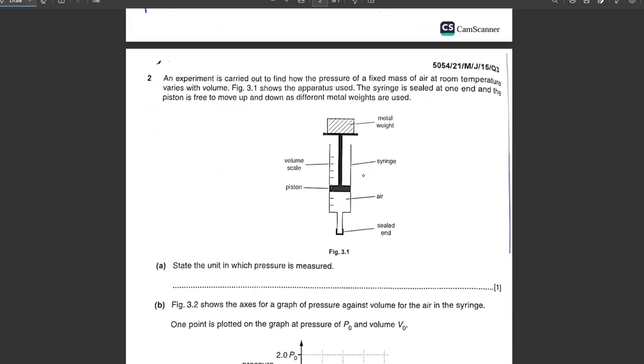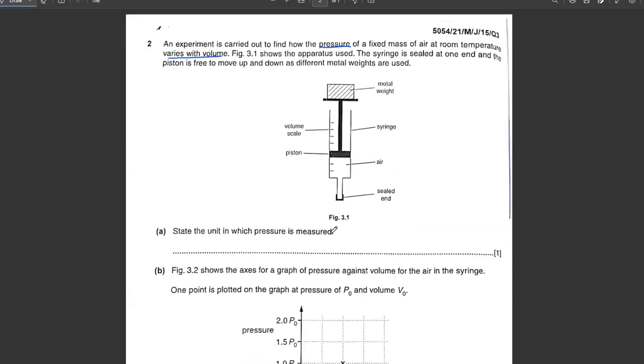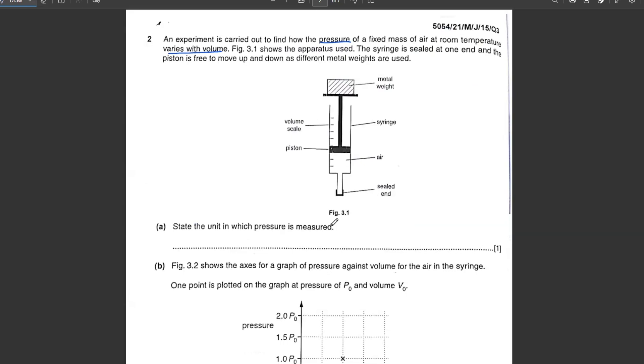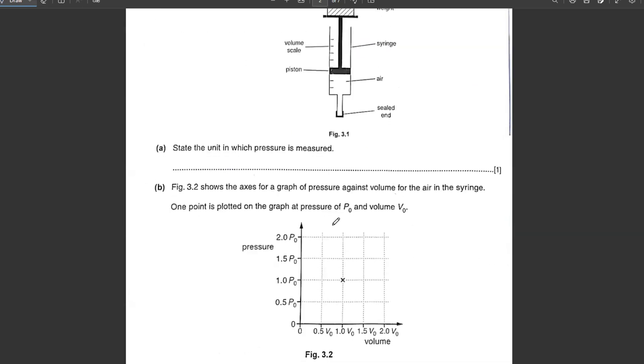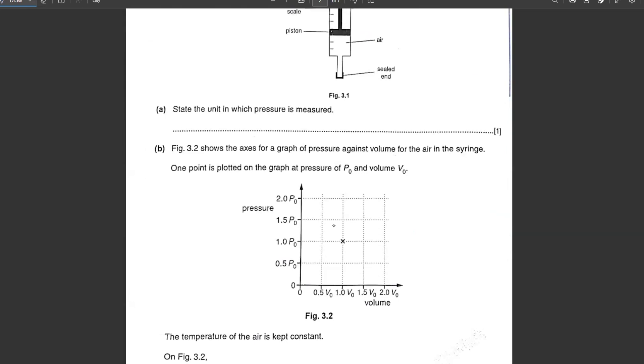Let's move on to the next question. An experiment is carried out to find how the pressure of a fixed mass of air at room temperature varies with volume. Figure 3.1 shows the apparatus used. The syringe is sealed at one end and the piston is free to move up and down as different metal weights are used. State the unit in which pressure is measured? Pascals.